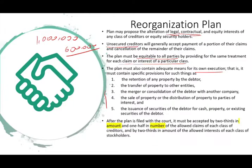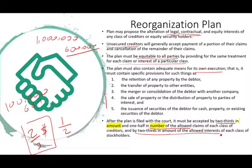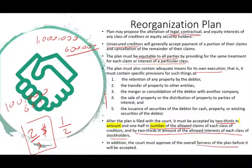After the plan is filed, it must be accepted by two-thirds in terms of amount and one-half — which is 50% — in the number of allowed claims for each class of creditors. So for each class, two-thirds of the dollar amount and half of the creditors must agree to the plan. Also, two-thirds in the amount of the allowed interest of each class of stockholders must approve the plan. In addition, the court must approve the overall fairness of the plan before it will be confirmed.